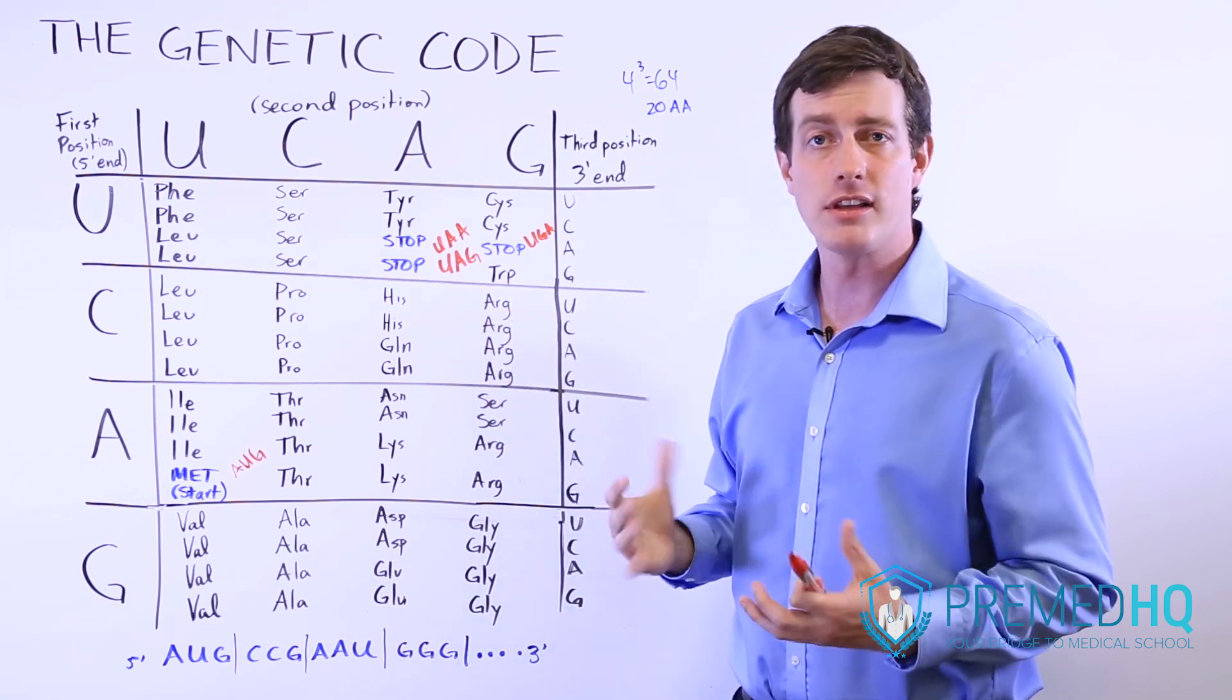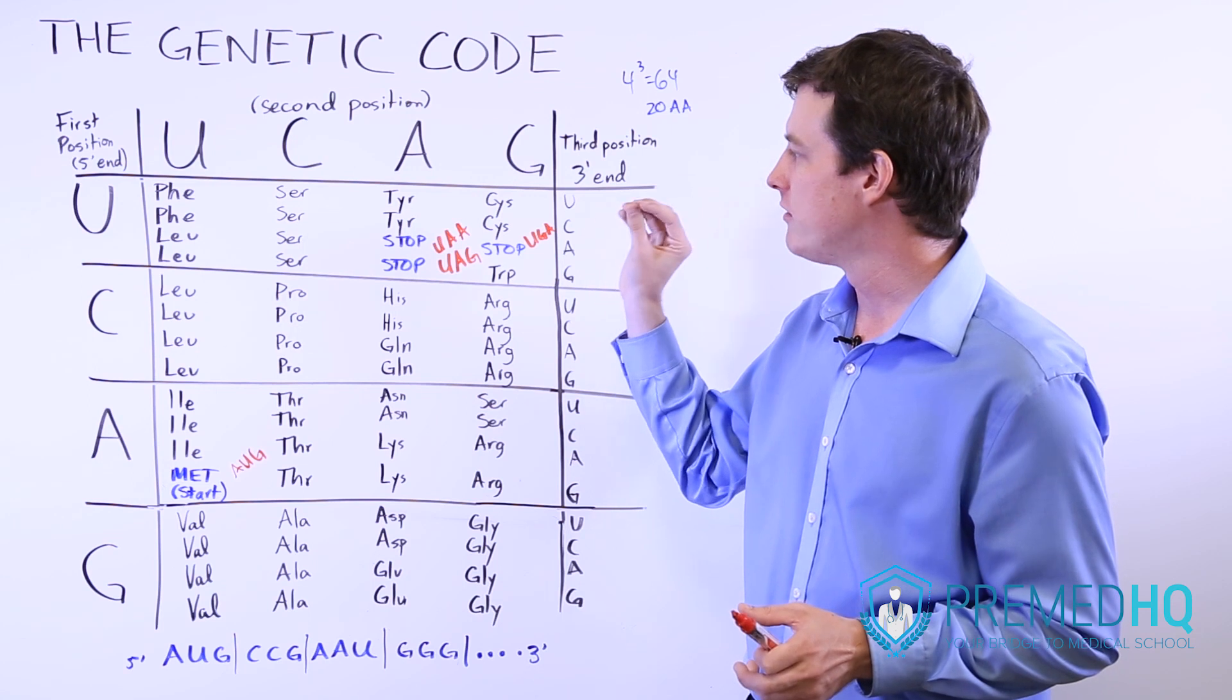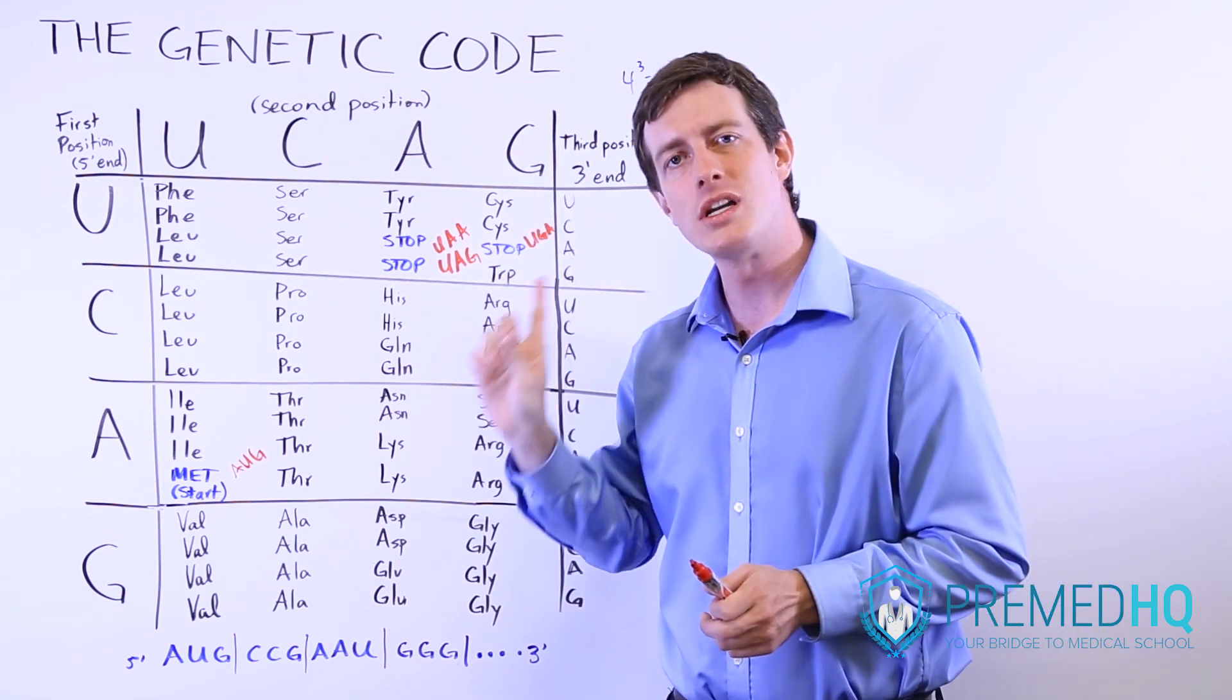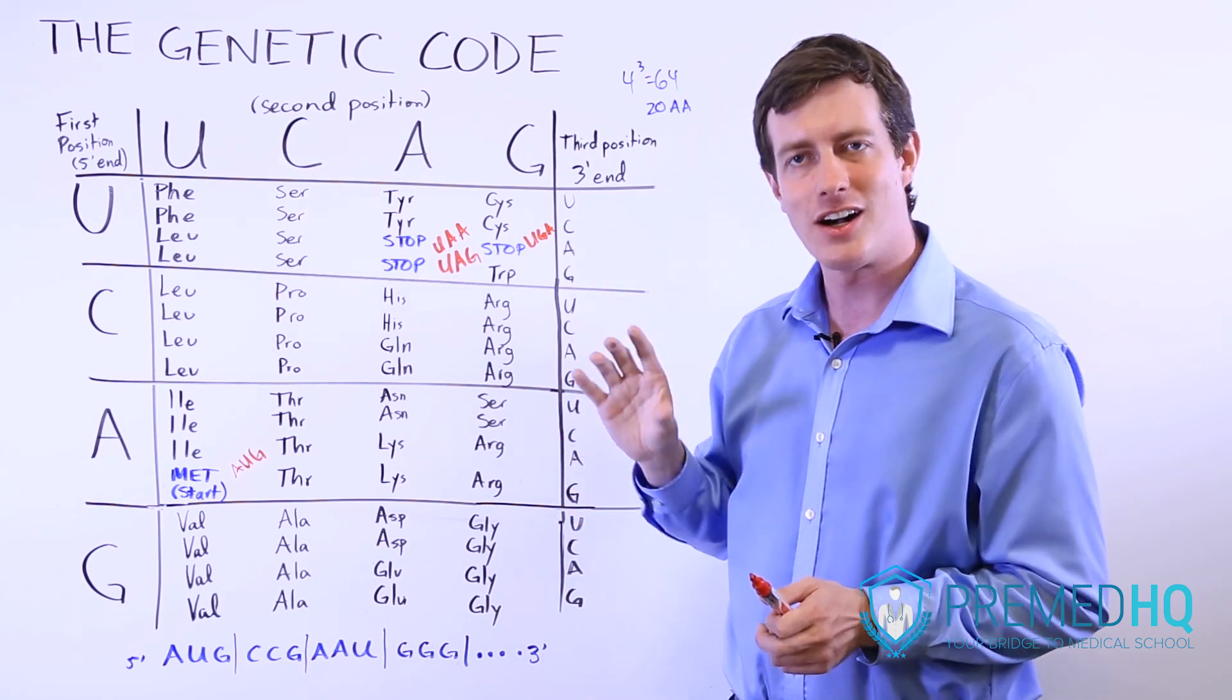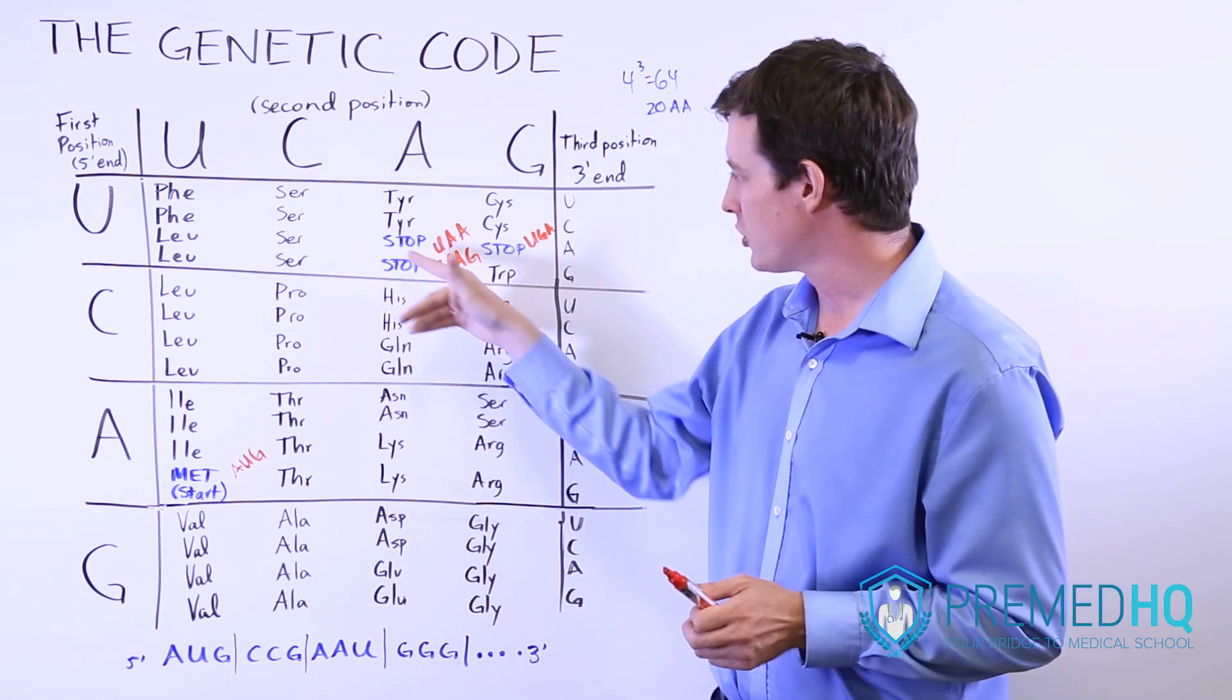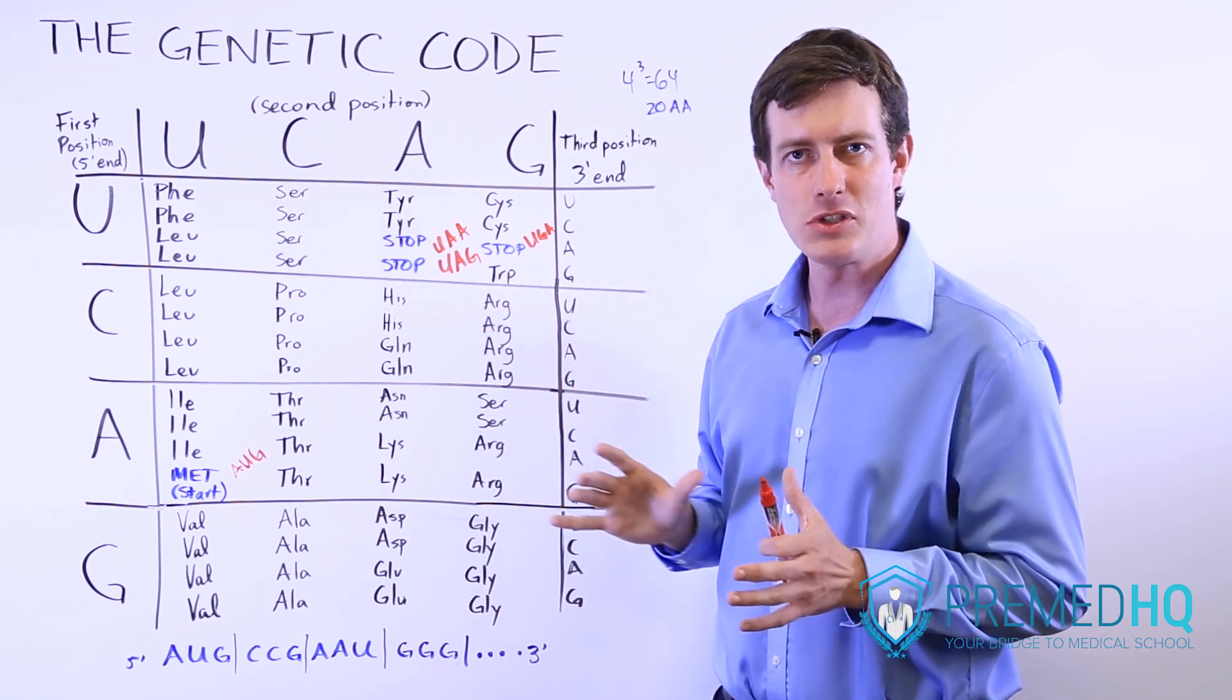It will be shorter and very likely it will not be a functional protein. And so that's a type of deleterious mutation that's caused by a point mutation. Just one base changing can cause a very harmful mutation by creating a premature stop codon. And that is something that is called a nonsense mutation.